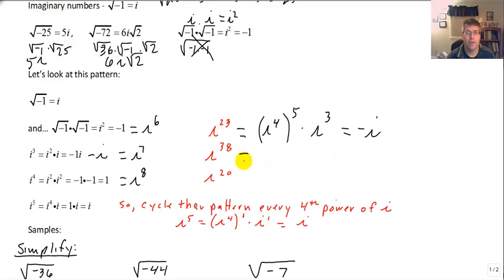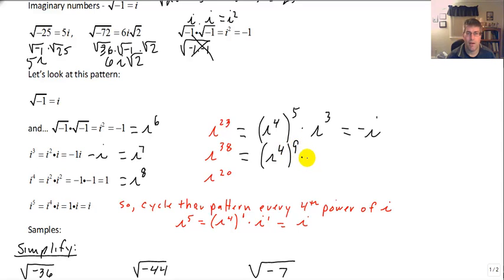Try i to the 38th. Let's divide 38 by 4 — 36 is divisible by 4. So that's i to the 4th, 9 times through the cycle, times i squared, because 36 plus 2 is 38. We know i squared is negative 1, so i to the 38th is negative 1.